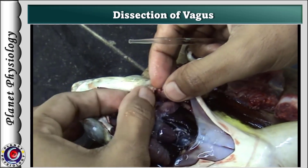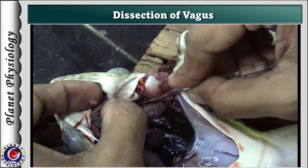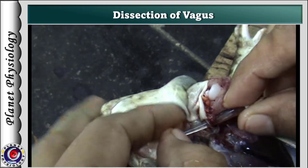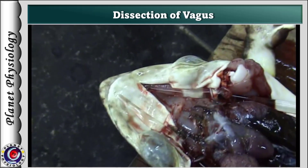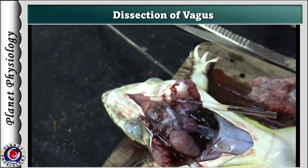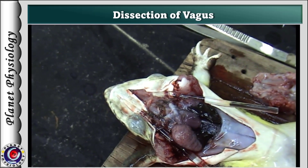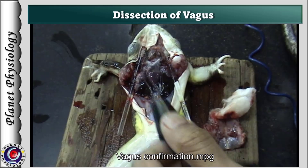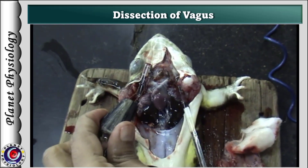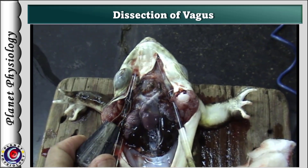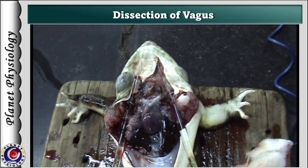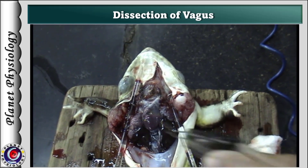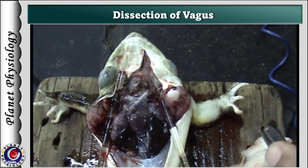The same procedure is repeated on the other side to dissect both right as well as left vagus. Before proceeding, we have to confirm that both the vagus nerves are correctly dissected and the current strength is adequate for obtaining the response. To test the current strength, we usually stimulate the exposed abdominal muscles of the frog — a mild contraction indicates the current is sufficient. Next we stimulate the vagus nerve and observe the cardiac activity. The heart stops momentarily in response to vagus stimulation, and this response is confirmed from the other vagus.